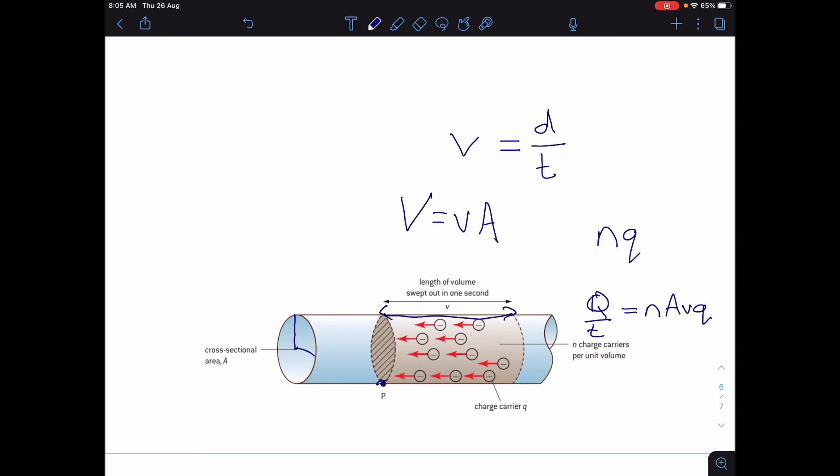Now, the total amount of charge per second is called the current. So I, the current travelling through that wire...